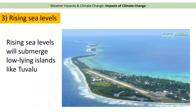As sea levels begin to rise, some of these very flat, low-lying, small islands will actually go under the water and be submerged. Obviously that has a big impact for the people living there — they'll eventually have to migrate somewhere else — and so that's another key impact of climate change.